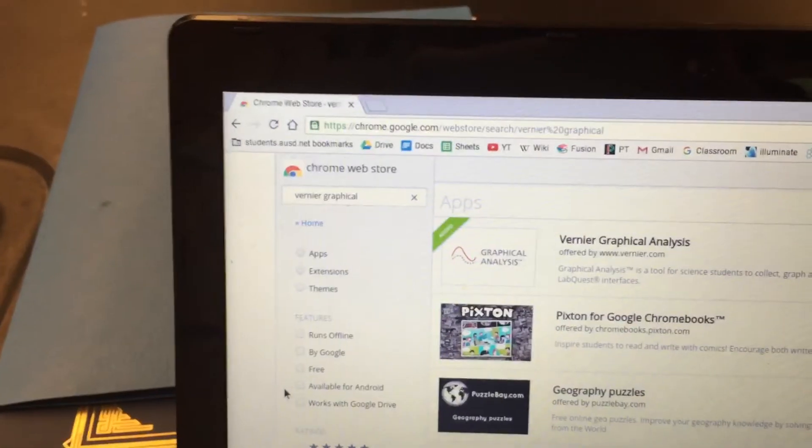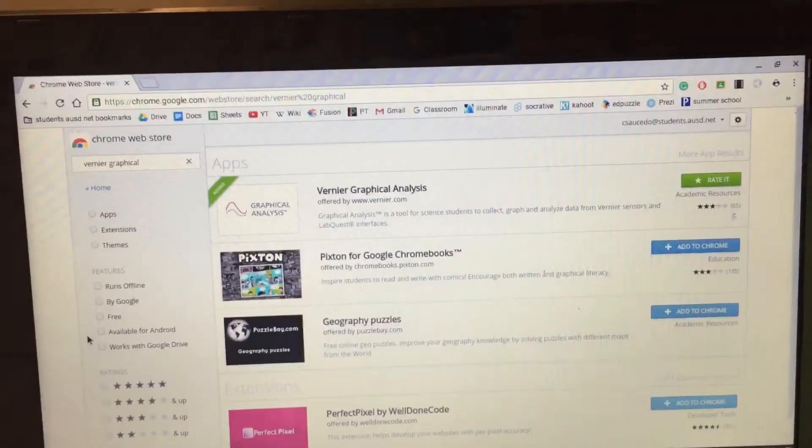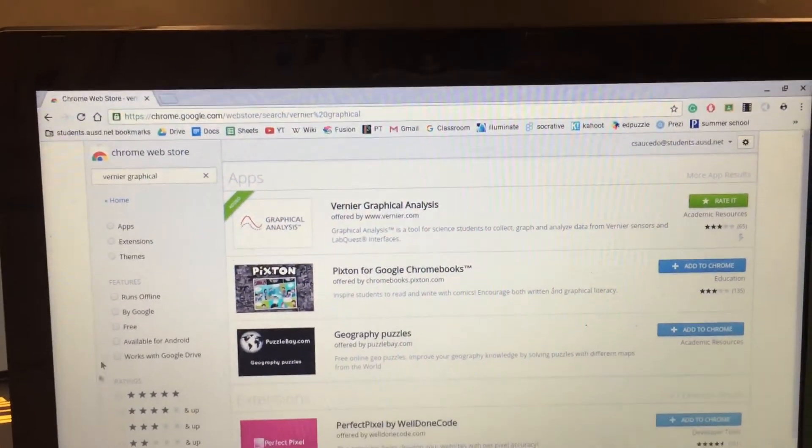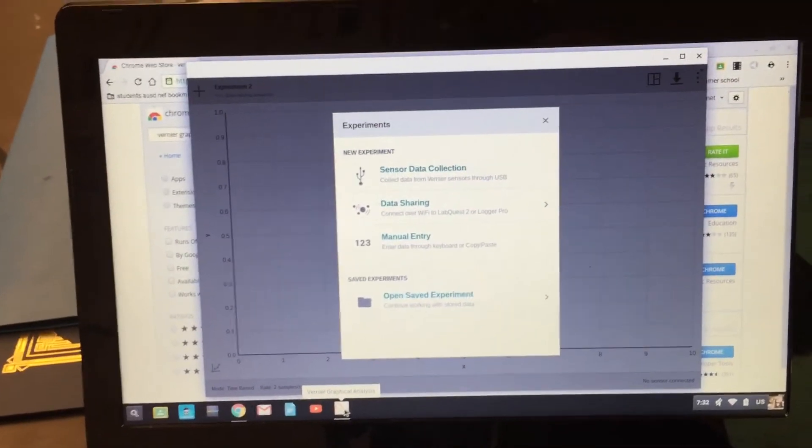So in case you haven't done it already, you need to download Vernier Graphical Analysis, which is an app or an extension for Chrome. When you open it up it looks something like this.